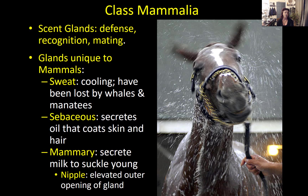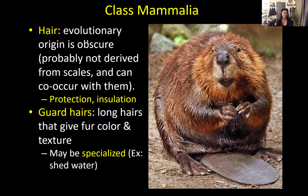Mammals also have sebaceous glands that secrete oil coating the skin and hair to keep it waterproof, clean, and soft. Mammary glands — where mammals get their name — produce milk meant to suckle young and provide them with nutrition. The nipple is an elevated outer opening of the gland, present in all mammals except the platypus and the echidna. Hair has an obscure evolutionary origin — unlike feathers, it's probably not derived from scales, and you can actually see hair co-occurring with scales (beavers have scales on their tail and hair on their body).